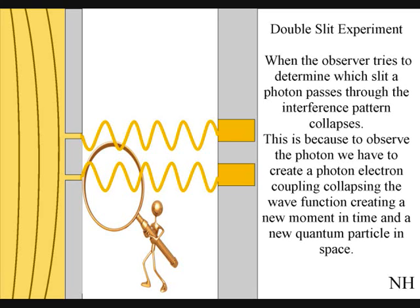Because to observe the photon, we have to create a photon-electron coupling collapsing each wavefront into a new quantum particle that will have its own position in space and time.